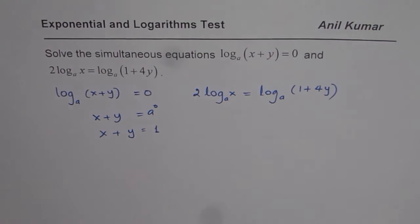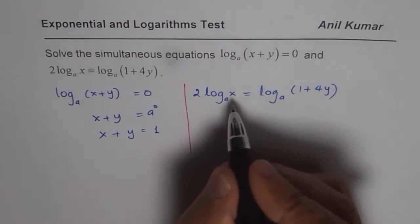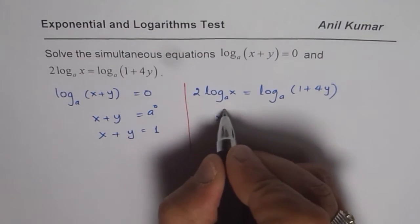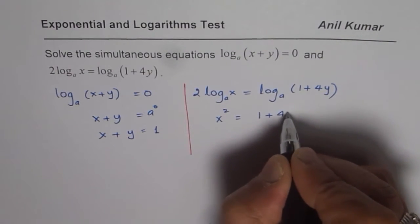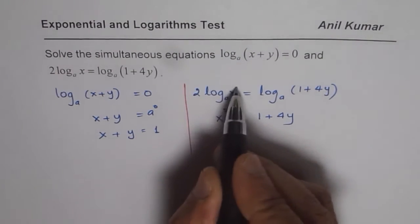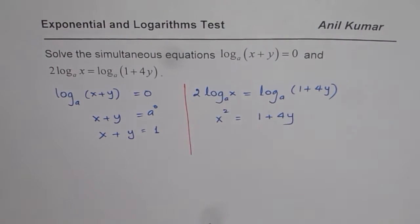On the other hand, if we solve the second equation, we could write this as x squared is equal to 1 + 4y. So 2 goes there. Both are log to the base A, so their arguments should be same.